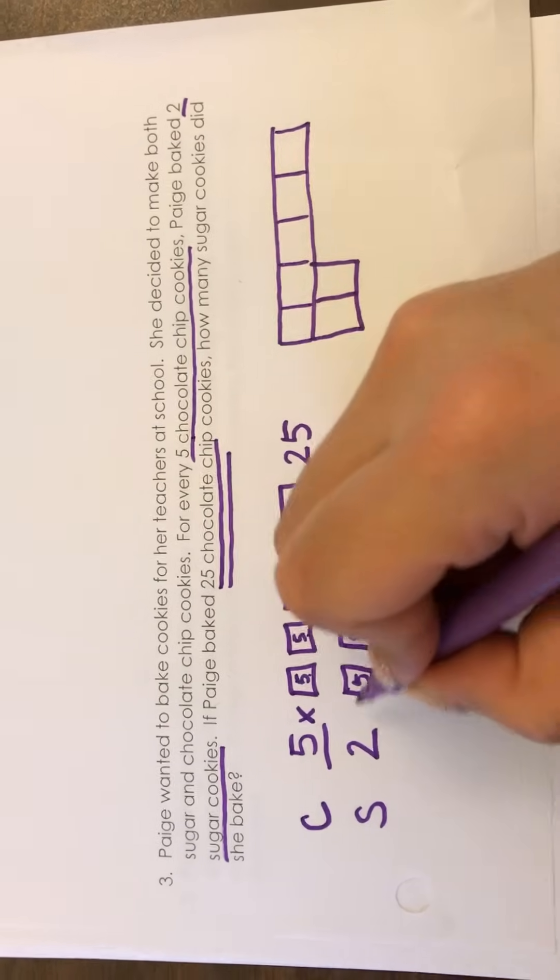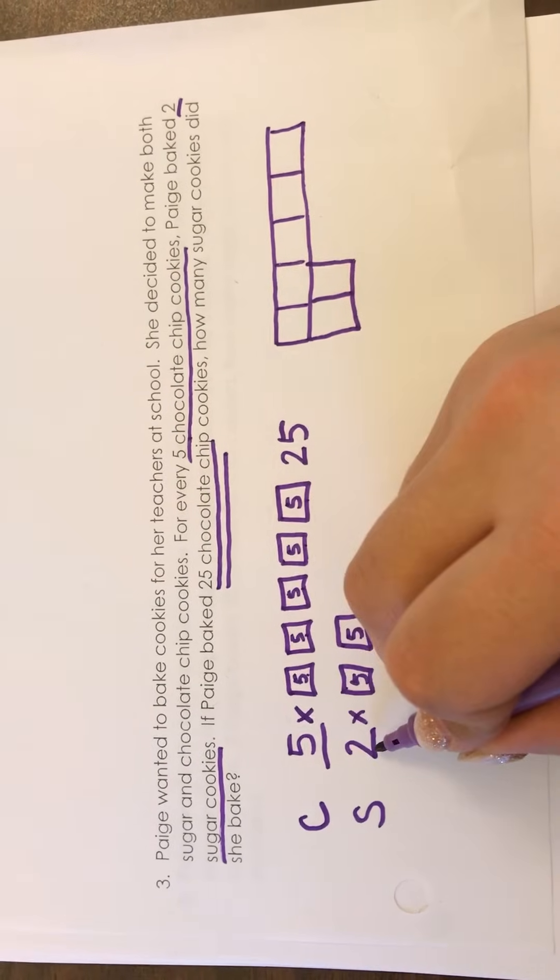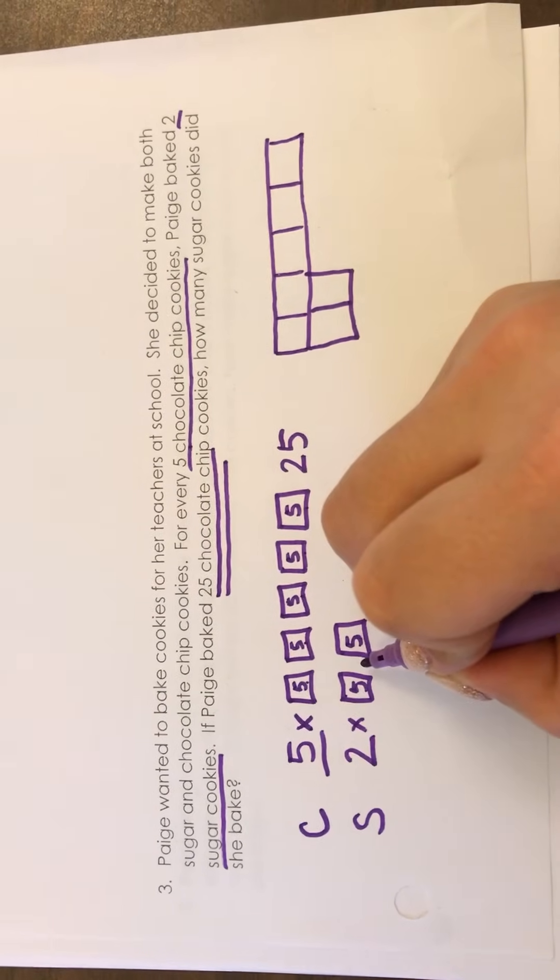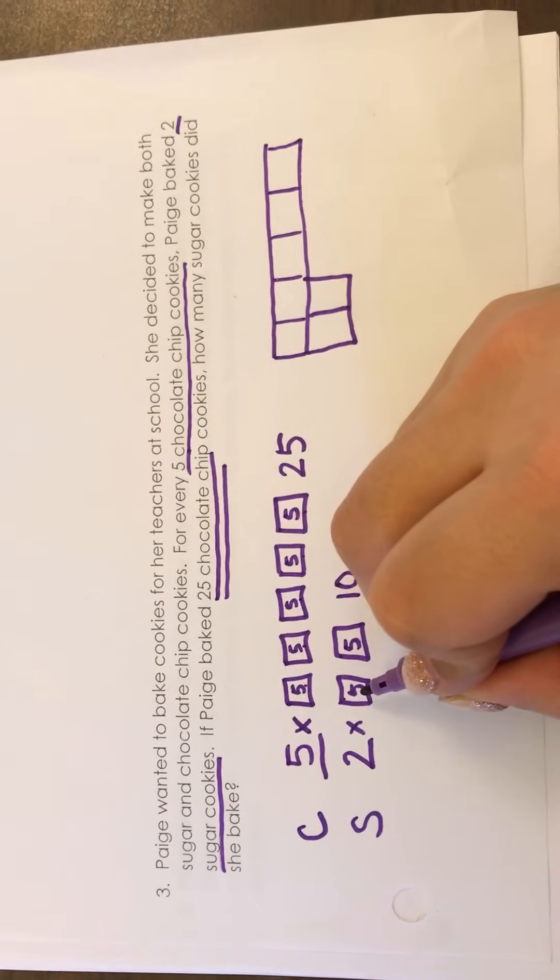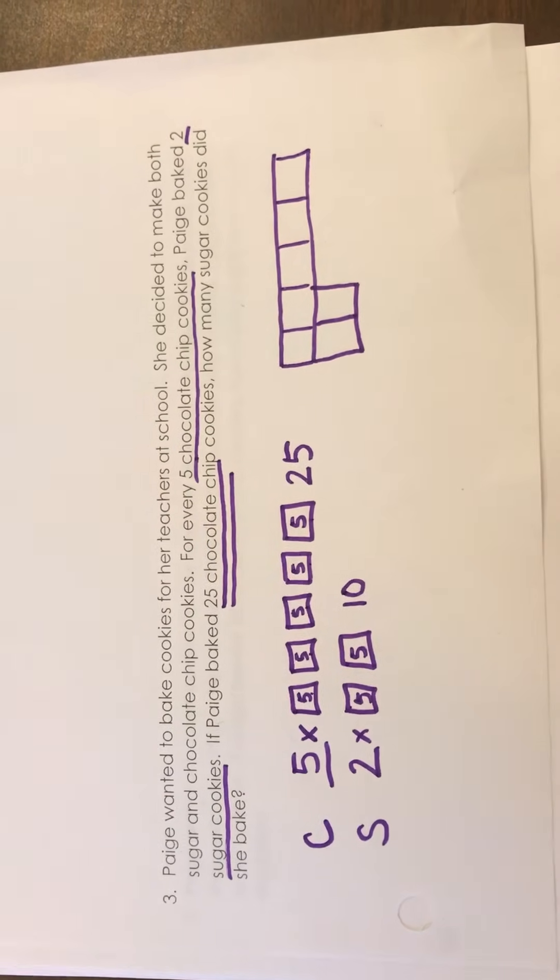And now to get my amount of sugar cookies all I have to do is five is 2 times 5 which gives me 10. And then if I count it to check 5, 10, there's the amount of sugar cookies.